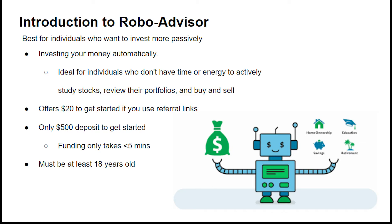A robo-advisor is an investing platform that utilizes software to invest your money automatically, which is ideal for individuals who want to invest more passively but don't have time or energy to actively study stocks, review their portfolios, and buy and sell. The greatest platform for this is Wealthfront, a robo-advising platform that's very great for newbies since their expert-built system invests for you. They'll even offer you $20 to get started if you use a referral link. You simply need to deposit $500 to get started, and it will take less than 5 minutes.